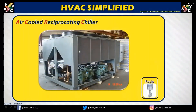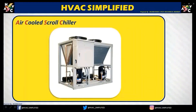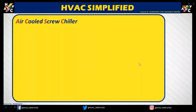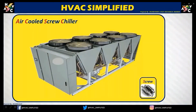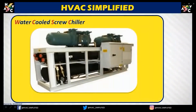Here is an example of an air-cooled reciprocating chiller, where the compressor type is known as a reciprocating compressor. Next is the air-cooled scroll chiller — here you can see the scroll compressor. Then the air-cooled screw chiller, where the compressor is a screw type. There is also a water-cooled screw chiller where you can find the same screw compressor.